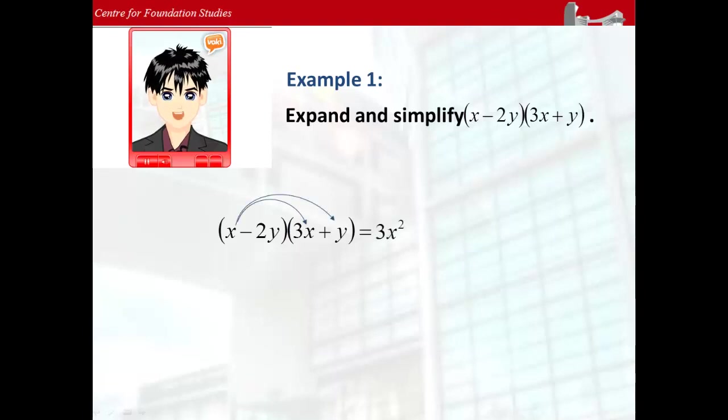x multiplies to y gives positive xy. Negative 2y multiplies to positive 3x gives negative 6xy.